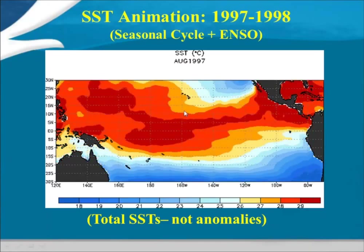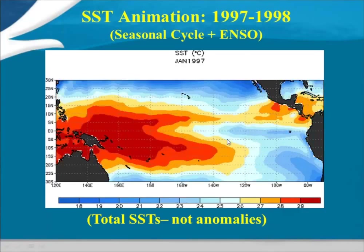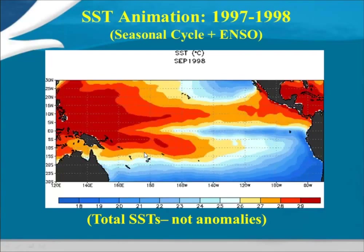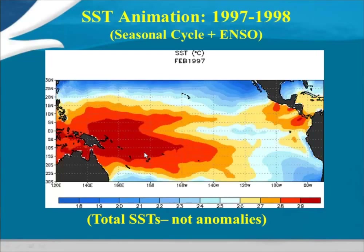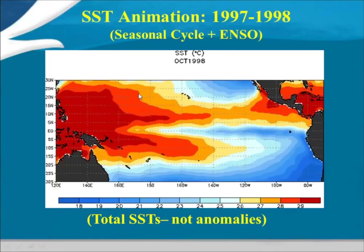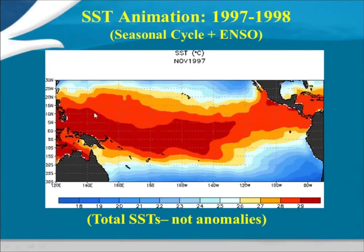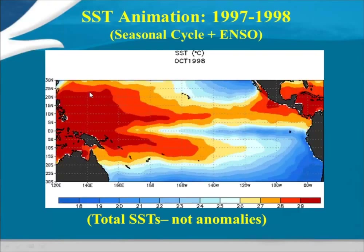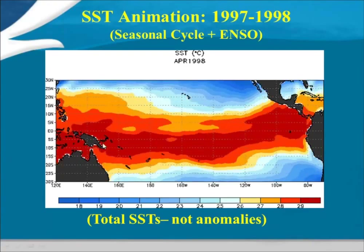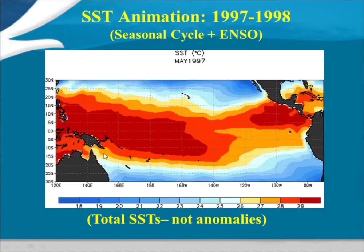I like this slide a lot because it shows total sea surface temperatures. Even though we track El Niño and La Niña with the anomalies or departure from average, there's a strong seasonal cycle across the tropical Pacific. The warmest SSTs tend to be in the western Pacific. During El Niño periods, those warm SSTs extend across the entire tropical Pacific — you can see it stretches across the whole basin. During La Niña, you see the blues.